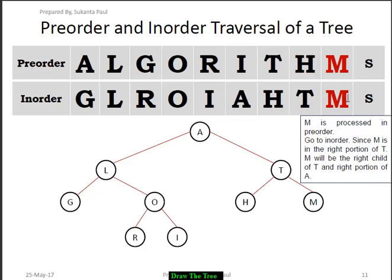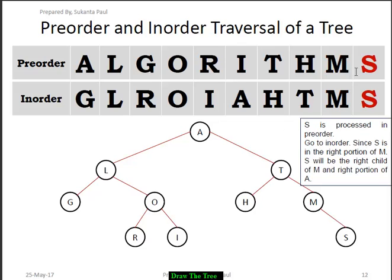We see that M is present on the right side of T, so M should be the right child of T. Then we proceed to the next node in pre-order, which is S. We see that S is in the right portion of M, so S will be the right child of M.